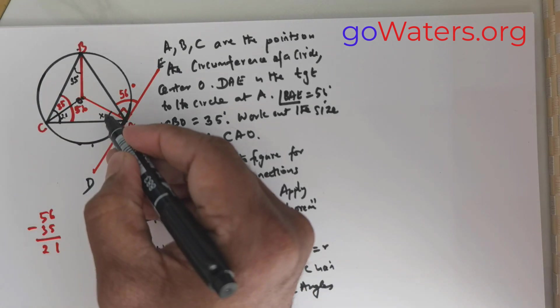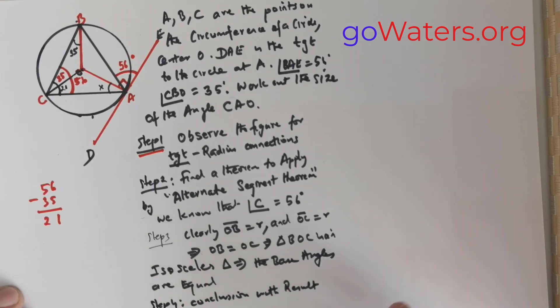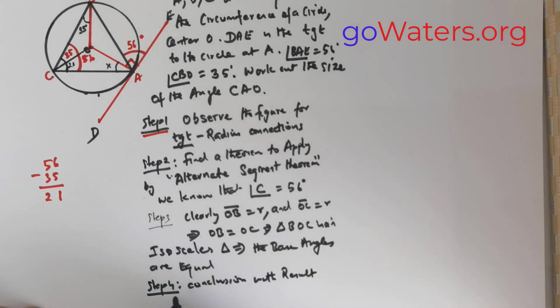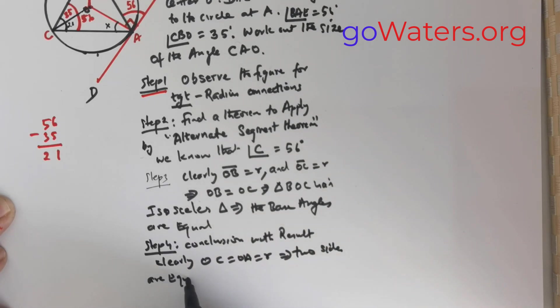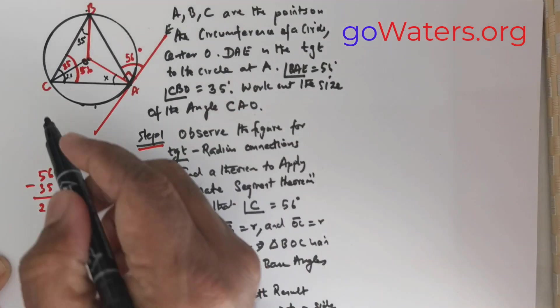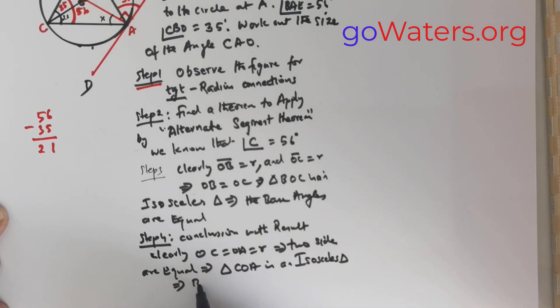Now what is X? Now watch here, OC, next step, step number 4, conclusion, conclusion with result. That's what I am doing. Now clearly what do you see? Clearly OC is equal to OA is equal to R. So this would mean two sides are equal. So this would mean triangle COA is an isosceles triangle. So this would mean the base angles are equal. This means the base angles are equal.